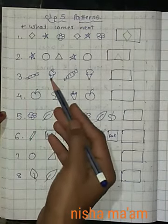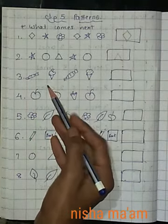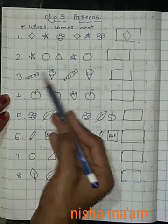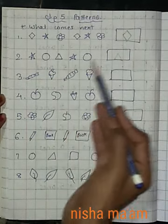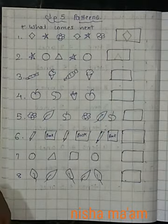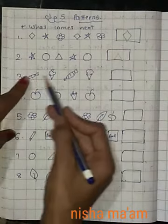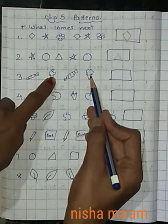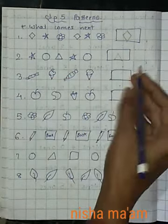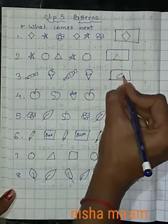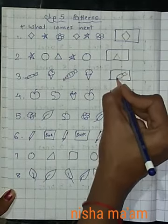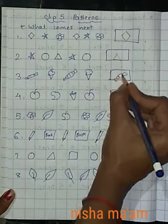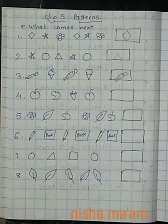फिर chocolate. मुह में पानी आ गया है, chocolate को देखके तो. Chocolate, ice cream, chocolate, ice cream. What we will write in the next? Chocolate. हमें ice cream के बाद क्या आता है? वो देखता है, जेखो. Chocolate, ice cream के बाद, chocolate. See, when there is a picture, you can easily look at it and write it, okay?